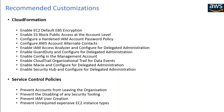Coming back to the customizations — they consist of two things: Service Control Policies and CloudFormation. The first step is that you create a few CloudFormation templates as per your organizational requirement, and also you create a few Service Control Policies according to your organization's requirements. Then you deploy them on top of Control Tower with the help of CFCT.